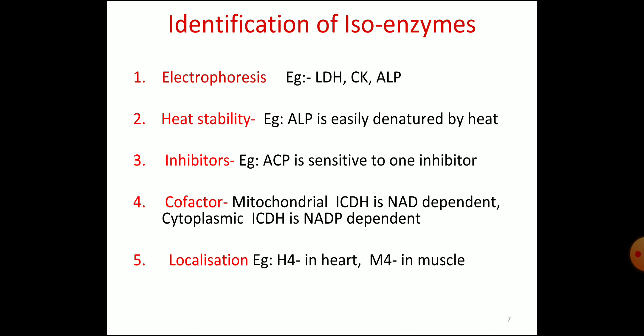There are various methods for identification of isoenzymes. One is electrophoresis. Another is heat stability — various isoenzymes have different heat stability, so by examining this we can identify the enzyme. Then depending upon the various inhibitors, certain isoenzymes can be identified. Cofactor is another method: mitochondrial isocitrate dehydrogenase is NAD-dependent and cytoplasmic isocitrate dehydrogenase is NADP-dependent, so by examining cofactor requirement we can identify the isoenzymes.